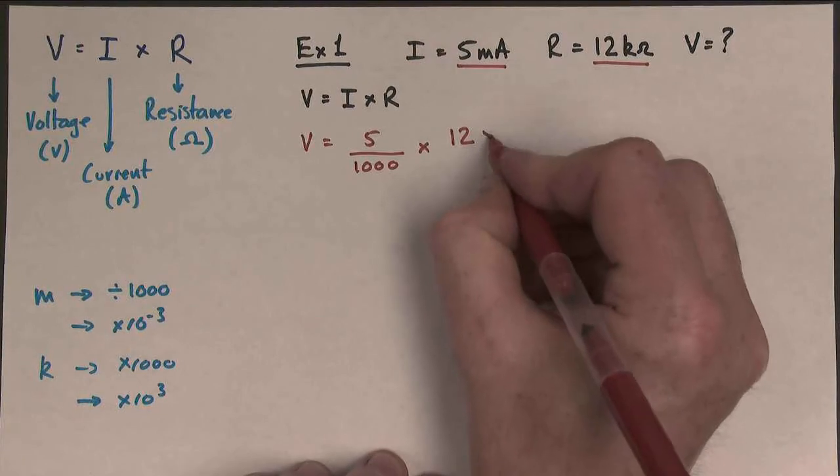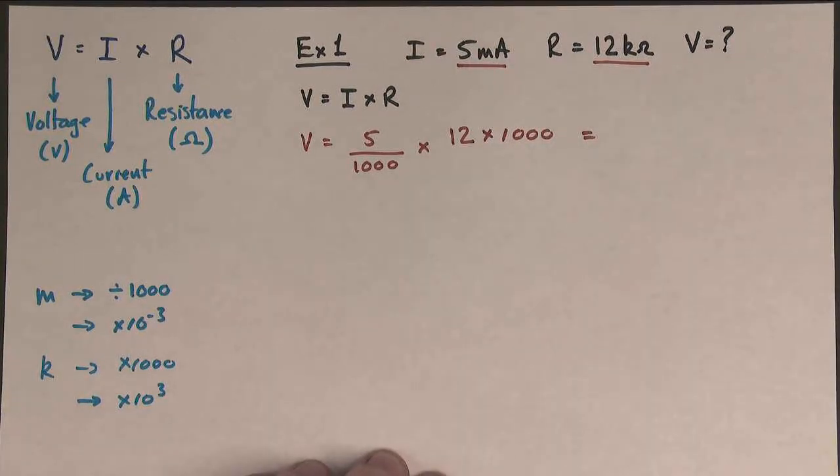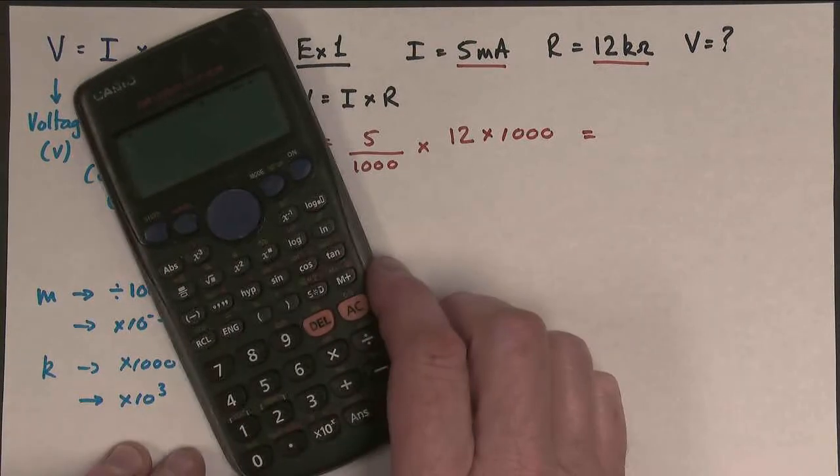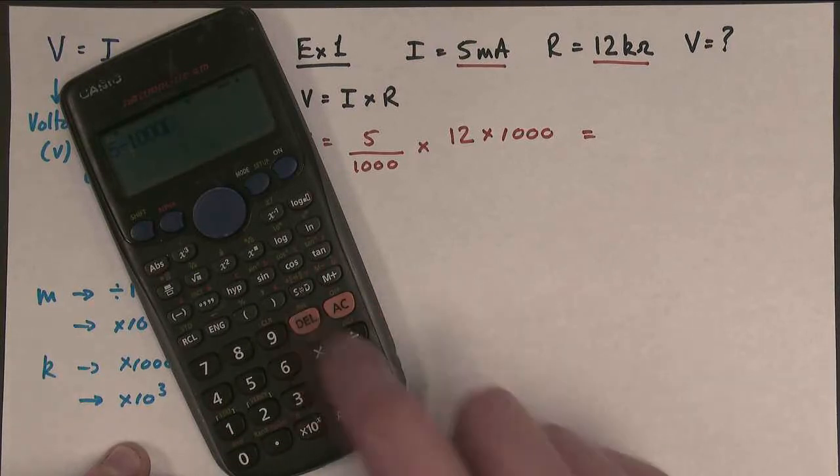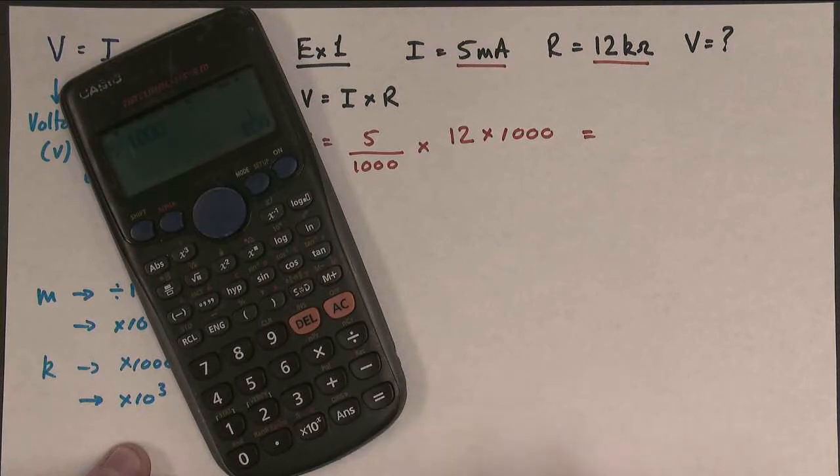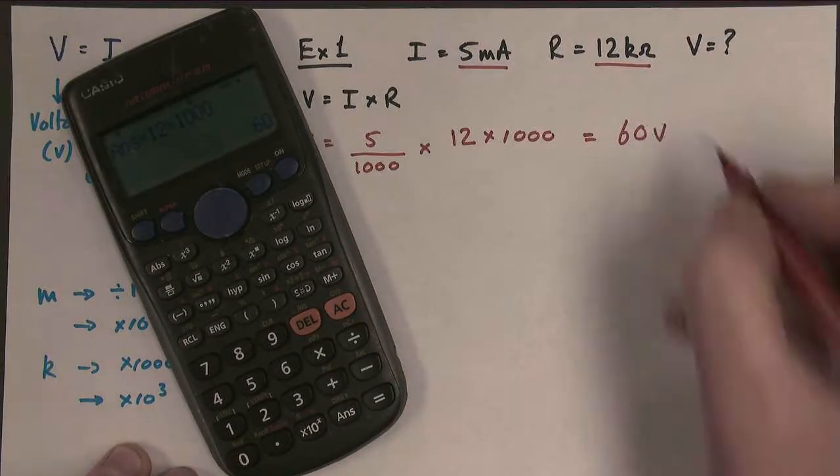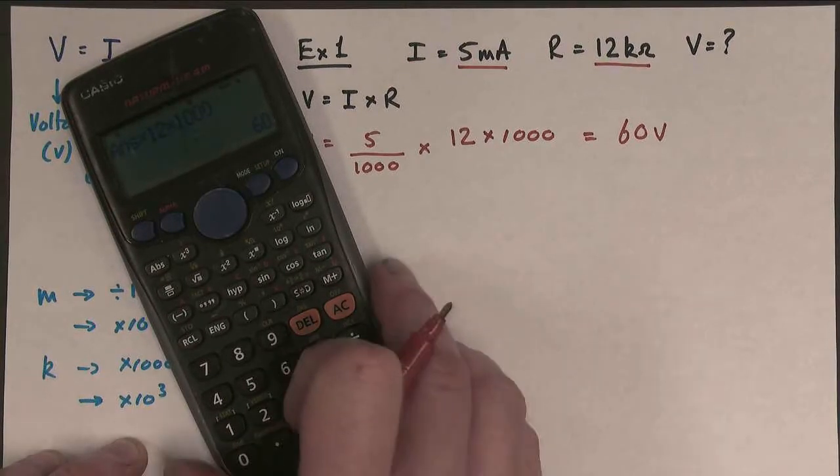So back to our problem. So it's times 1,000. So what does that come out to be? Well, let's have a look. Here's our calculator. So we do 5 divided by 1,000 equals times by 12 times 1,000 equals, and the answer comes out to be 60 volts. So there we have successfully used our numbers with prefixes to get the correct answer.